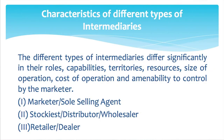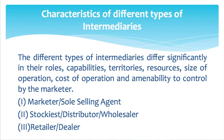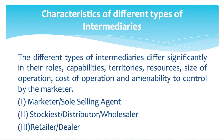Now we will discuss the characteristics of different types of intermediaries. Different types of intermediaries differ significantly in their roles, capabilities, territories, resources, and size of operation. A marketer or sole selling agent is usually a big marketing intermediary with large resources and extensive territory of operation. They normally take over a major share of the marketing responsibility and functions on behalf of the manufacturer. Then come stockists, distributors, and wholesalers, who operate under the marketer or sole selling agent.